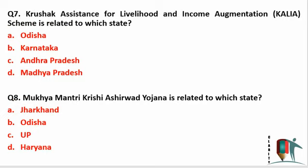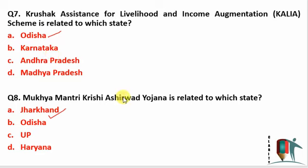A state-based question: The Kaliya scheme is related to which state? Kaliya scheme has been launched in Odisha. Similarly, Mukhya Mantri Krishii Ashirwad Yojana is related to which state? It has been launched in Jharkhand. Both are fact-based questions — you should know that Kaliya is Odisha and Ashirwad Yojana is Jharkhand.